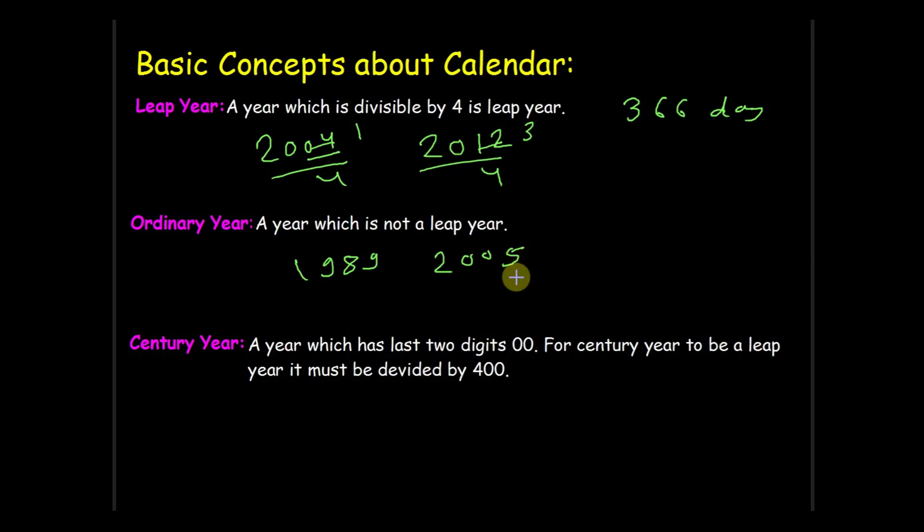Third is century year. Century year is a year which has last two digits 00, or which is divisible by 100. The important thing to learn is for a century year to be a leap year it should be divisible by 400. For example, 1600 is divisible by 400 so it is a leap year. And another one is 1200 - 1200 is also divisible by 400 so it is also a leap year.